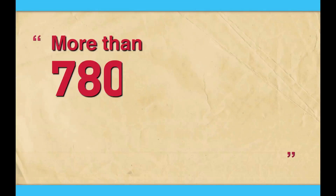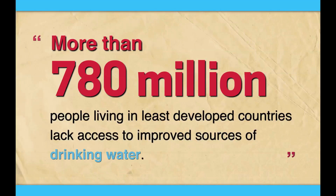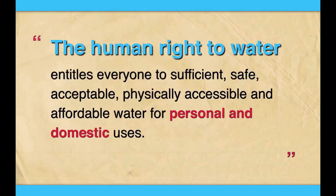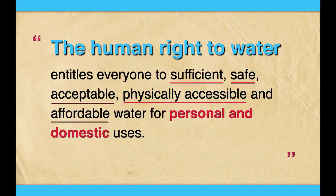Up to this date, and according to the World Health Organization, more than 780 million people living in least developed countries lack access to improved sources of drinking water. Under the UN's General Comment No. 15, Paragraph 2, the human right to water entitles everyone to sufficient, safe, acceptable, physically accessible and affordable water for personal and domestic uses.